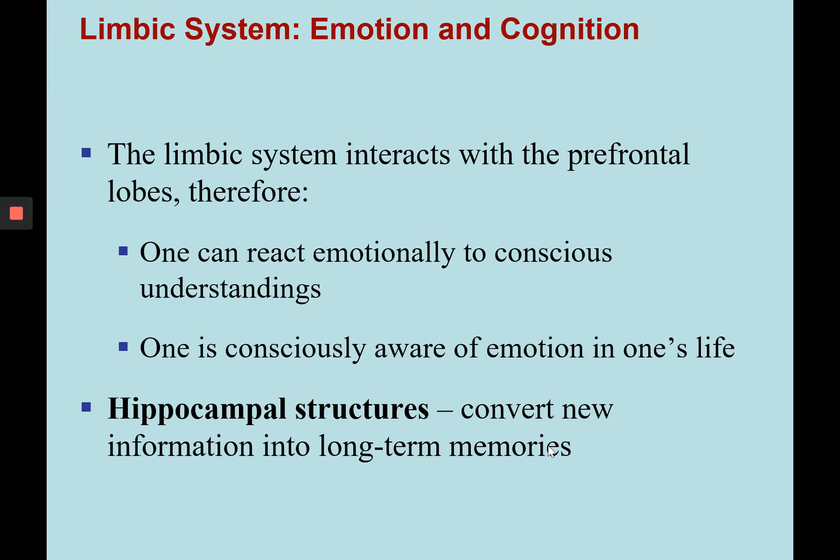The limbic system interacts with the frontal lobe, specifically the prefrontal cortices, known as the multimodal association area, allowing us to put conscious understanding to emotion or respond with emotion to conscious understandings. It makes sure we're consciously aware of emotions in our life, associates memories with how we felt when they were formed, and it's the hippocampal structures that convert new information into long-term memories.